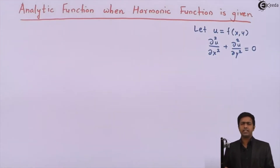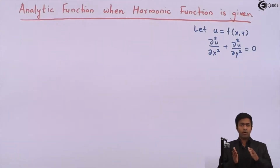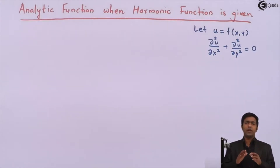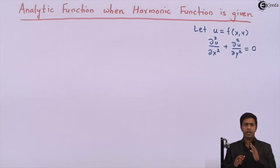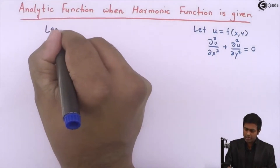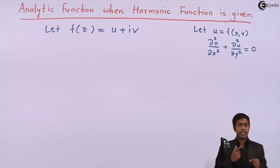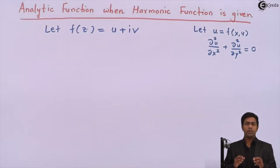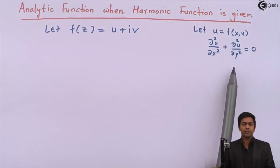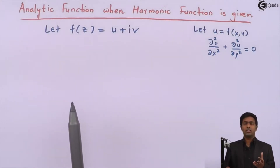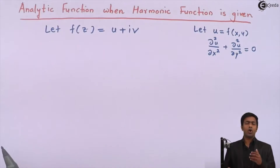If the function u satisfies the Laplace equation, we say that u is a harmonic function. Now, when an analytic function f(z) is given, it has two parts — real part u and imaginary part v — and both are harmonic. This is the property of an analytic function. So whenever f(z) is analytic, u and v are conjugate harmonic functions of each other.